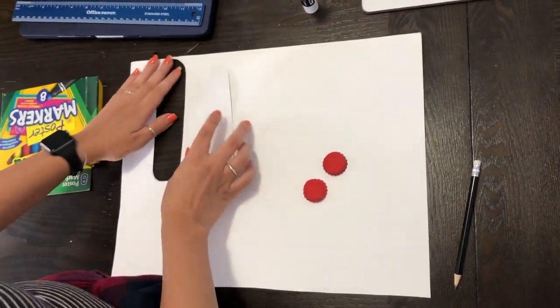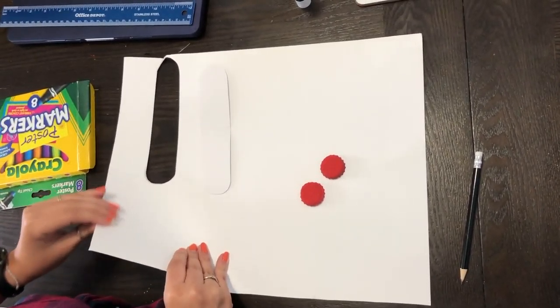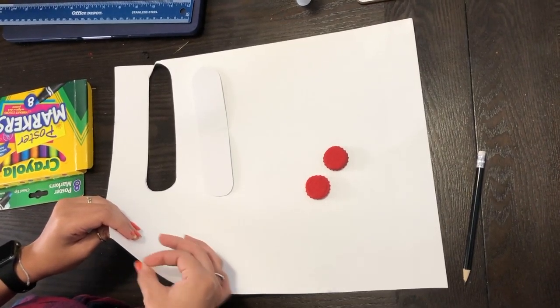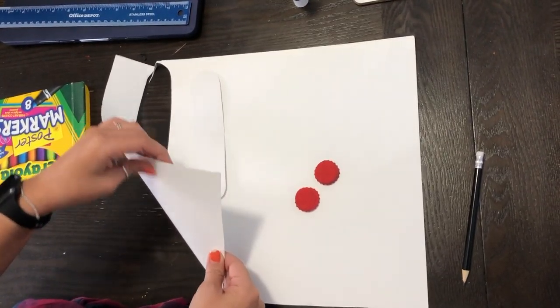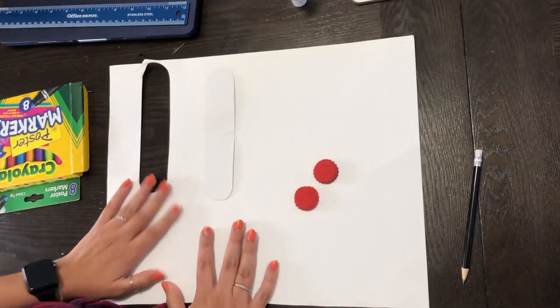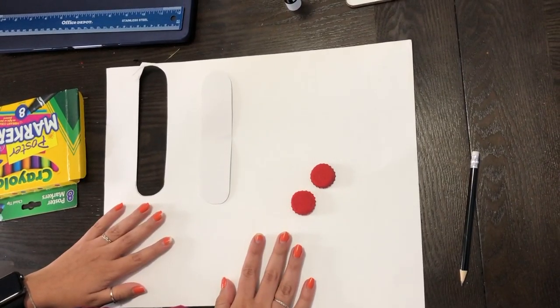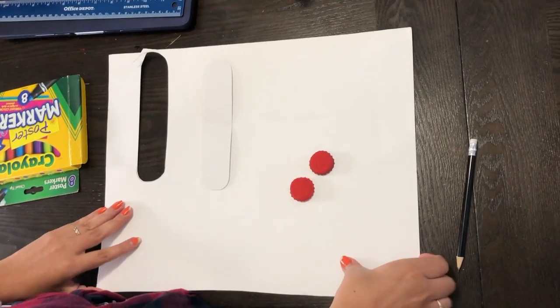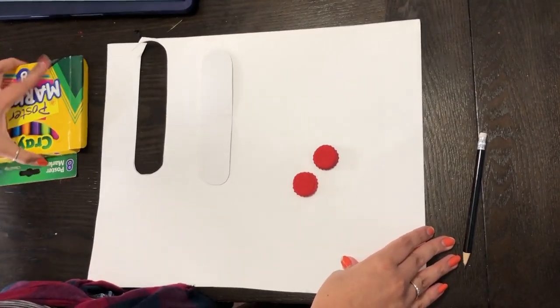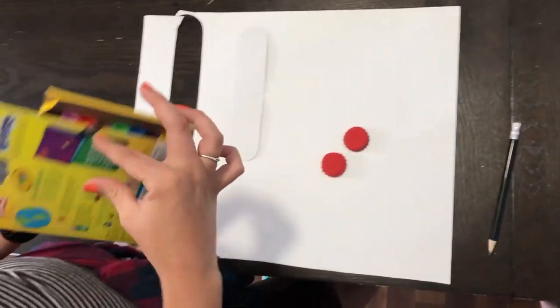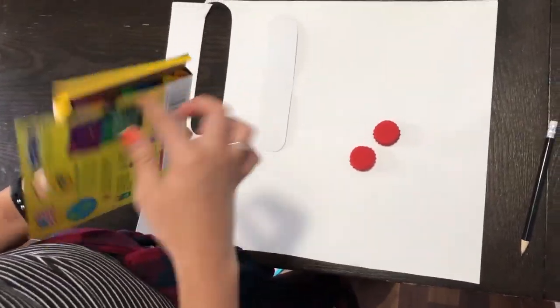So what you're gonna need is either cardboard, cardstock, or some kind of thick paper. This is a recycled piece of poster board that I'm using. You can use the back of a cereal box, you could ask your parents to see if they have any poster boards, or if you have an old marker box, take out your markers and you can use this.